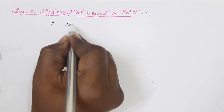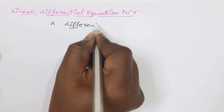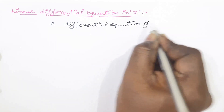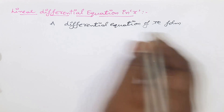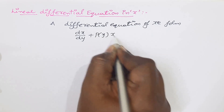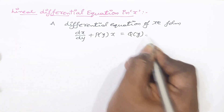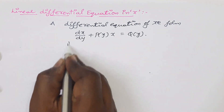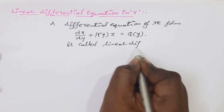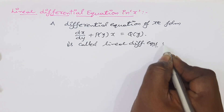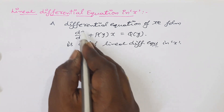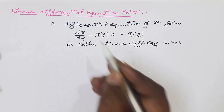A differential equation of the form dx/dy plus P(y) times x is equal to Q(y). This is called the standard form of linear differential equation in the dependent variable x. In the problem, when dy/dx is used, y is the dependent variable. Here, dx/dy is used, so x is the dependent variable.